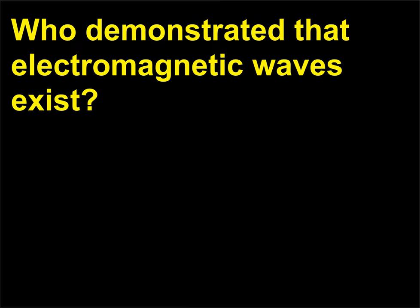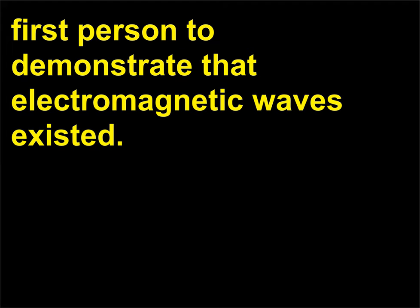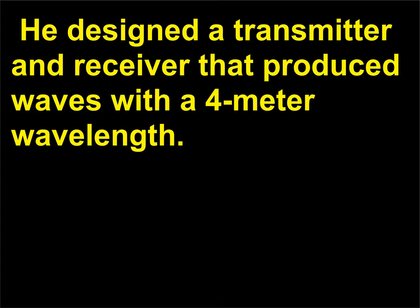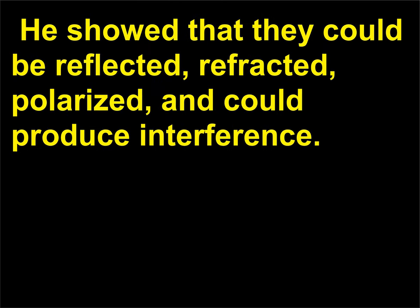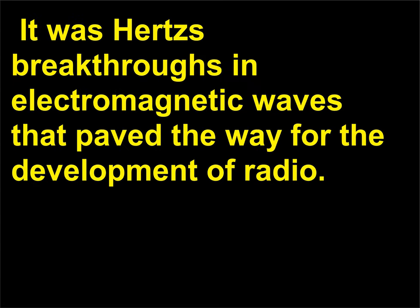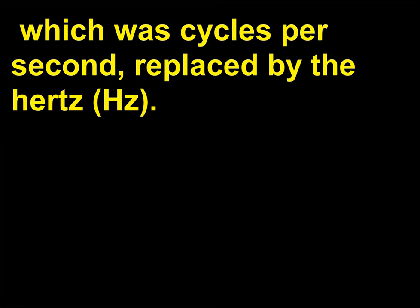Who demonstrated that electromagnetic waves exist? Heinrich Hertz (1857-1894) was a German physicist who was the first person to demonstrate that electromagnetic waves existed. He designed a transmitter and receiver that produced waves with a 4 meter wavelength. He used standing waves to measure their wavelength. He showed that they could be reflected, refracted, polarized, and could produce interference. It was Hertz's breakthroughs in electromagnetic waves that paved the way for the development of radio. In 1930 Hertz was honored by having the unit of frequency, which was cycles per second, replaced by the Hertz, Hz.